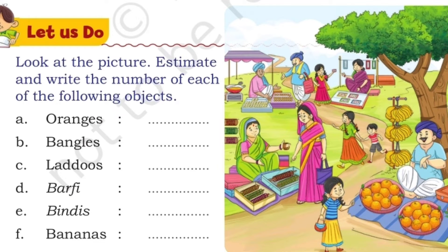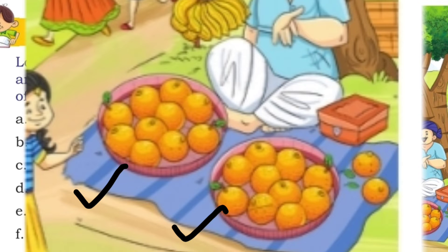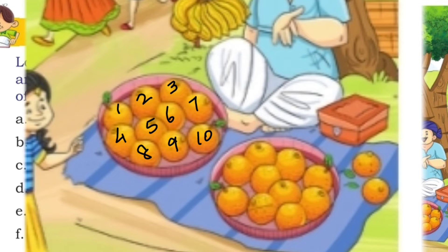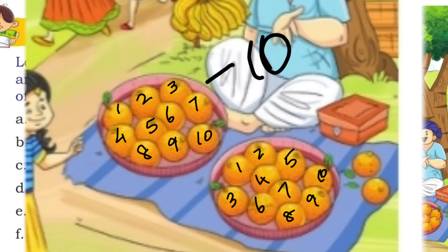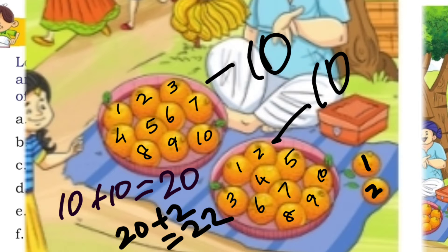Let's start with oranges. We have two baskets full of oranges and two separate oranges. We count how many oranges are in each basket: 1 through 10 — so 10 oranges in one basket. The second basket also has 10 oranges. So 10 plus 10 is 20, and we have 2 separate oranges. So 20 plus 2 is 22. We have 22 oranges.